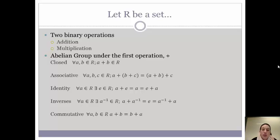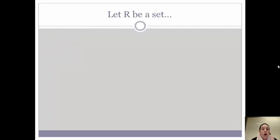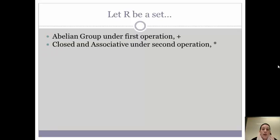If you're unclear on any of these, go back and watch a presentation entitled Groups — that's also part of this playlist, which should really help you out. So R is our set. We are an abelian group under the first operation, but now we have the second operation. So we need to check that we are closed and associative under our second operation.